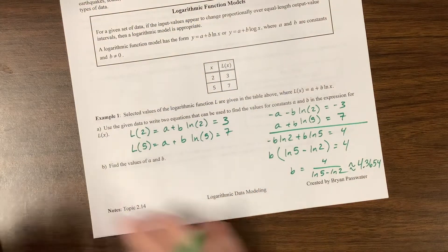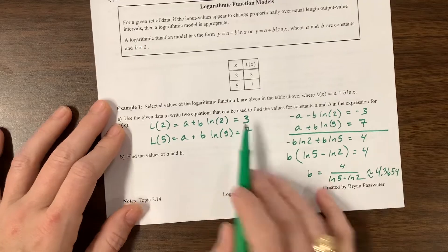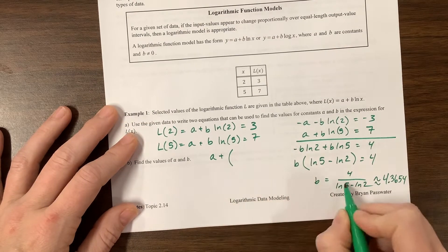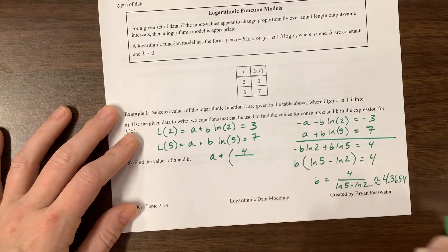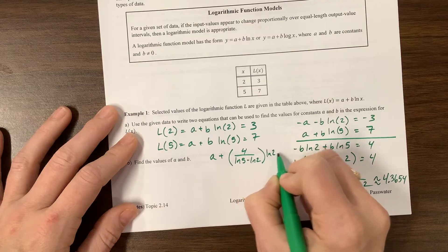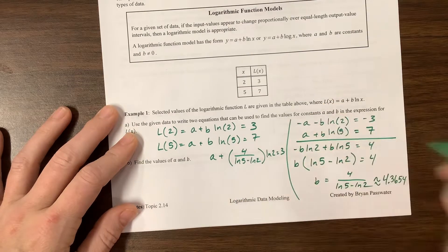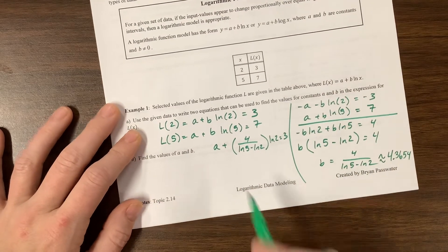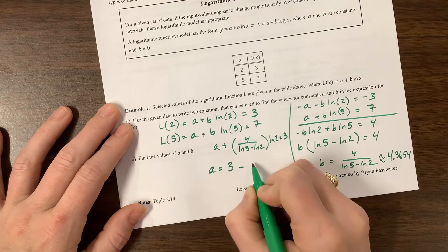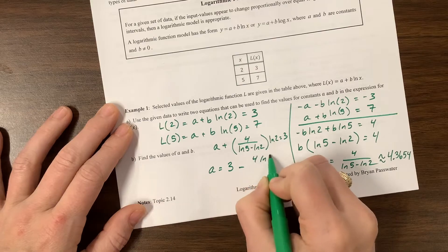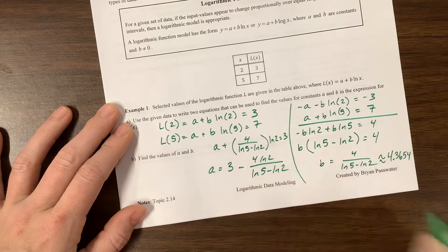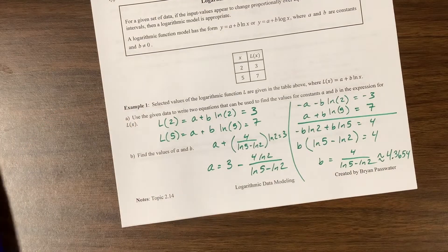To find the exact value of A, I can plug this back in and say A plus, well my B value, the exact B value is 4 over natural log of 5 minus the natural log of 2 times the natural log of 2, and that equals 3. I didn't save myself enough space. So I see A would be equal to 3 minus 4 times the natural log of 2 in the numerator over natural log of 5 minus the natural log of 2.